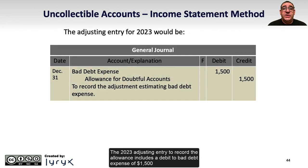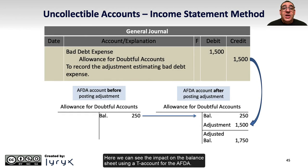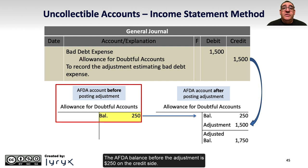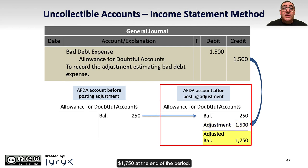The 2023 adjusting entry to record the allowance includes a debit to bad debt expense of $1,500 and a credit to the Allowance for Doubtful Accounts (AFDA) of $1,500. The AFDA balance before the adjustment is $250 on the credit side — the normal balance of the AFDA account is a credit. The adjustment adds another $1,500 on the credit side, resulting in an adjusted balance of $1,750 at the end of the period.